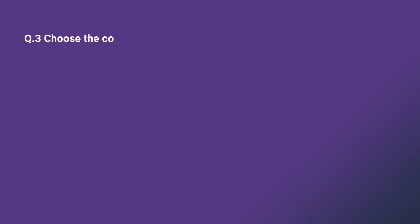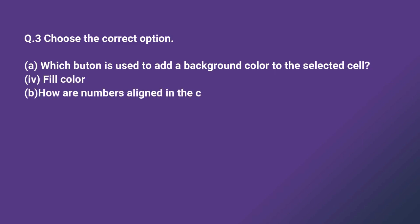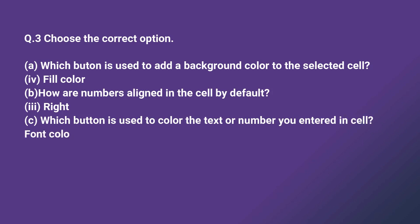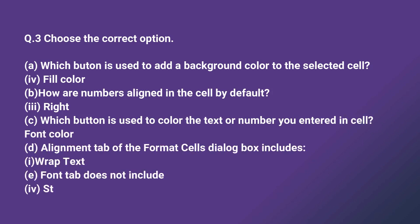Third one is choose the correct option. Which button is used to add a background color to the selected cell? — Fill Color. How is a number aligned in the cell by default? — Third option, Right. Which button is used to color the text you entered in a cell? — Font Color. The Alignment tab of the Format Cells dialog box includes Wrap Text, and the Font tab does not include Style.